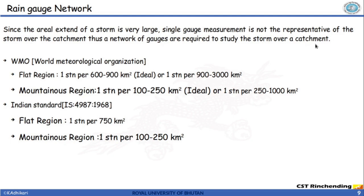According to the World Meteorological Organization, one station for every 100 to 250 square kilometers is recommended for mountainous regions like Bhutan. Likewise, IS standard also recommends the same value.